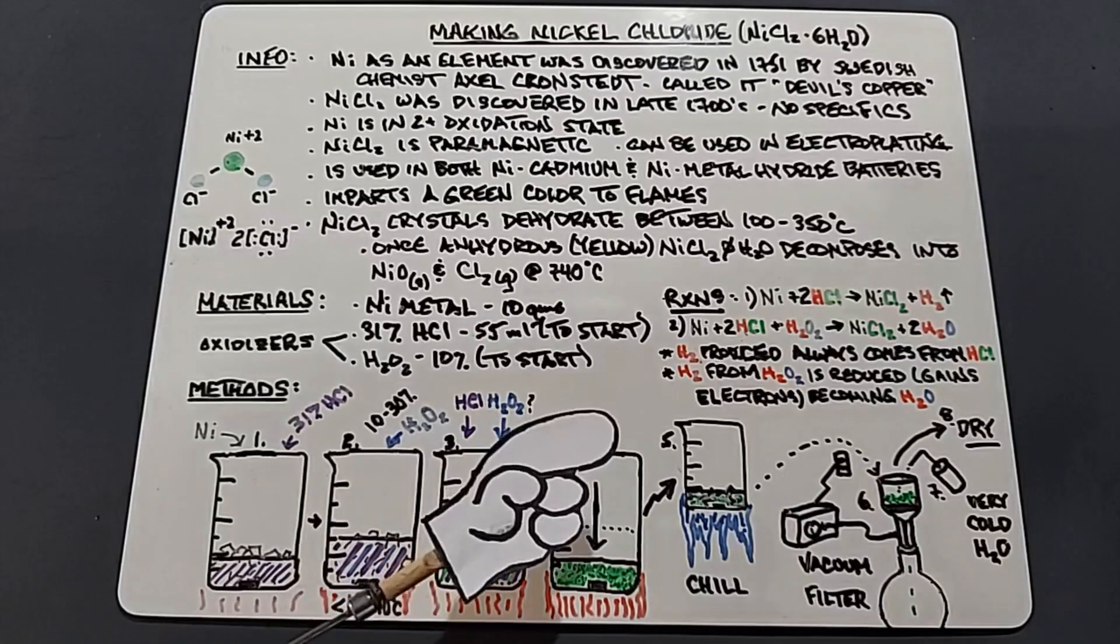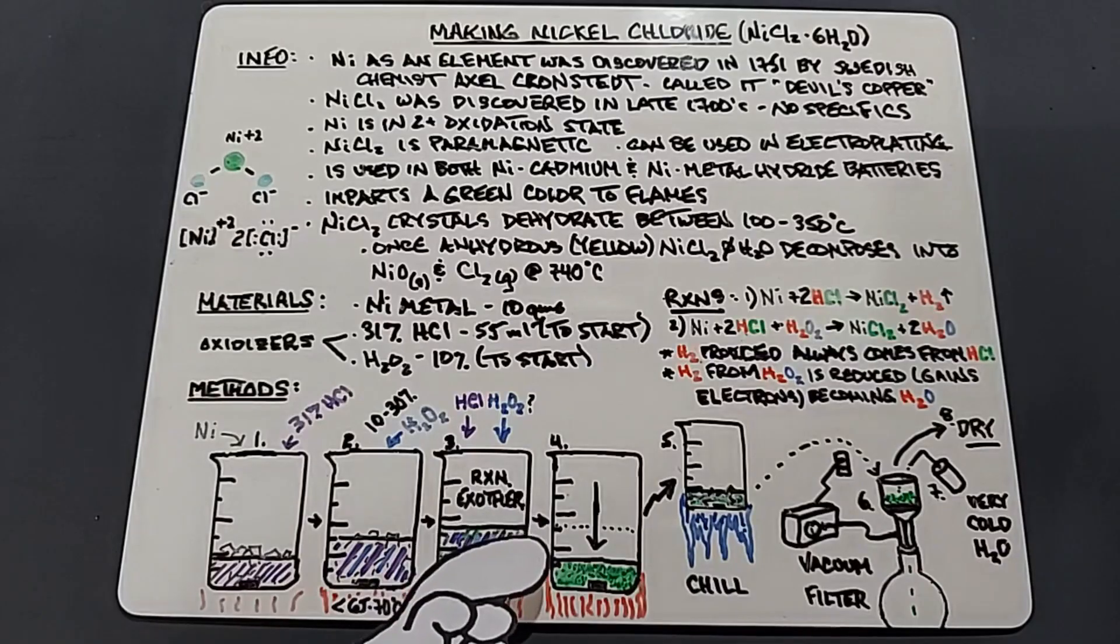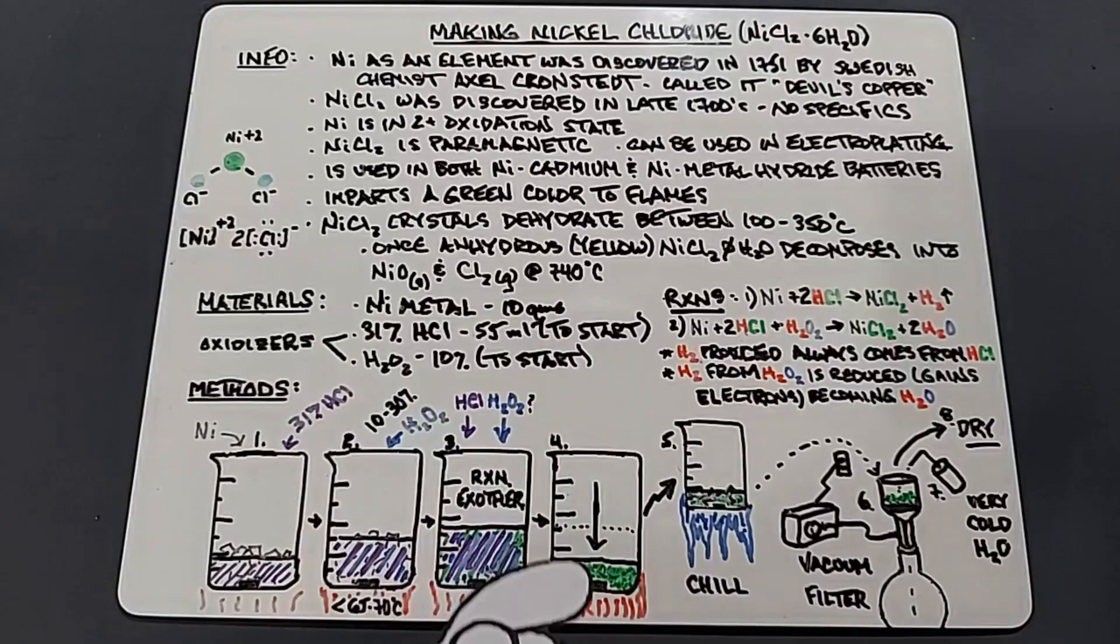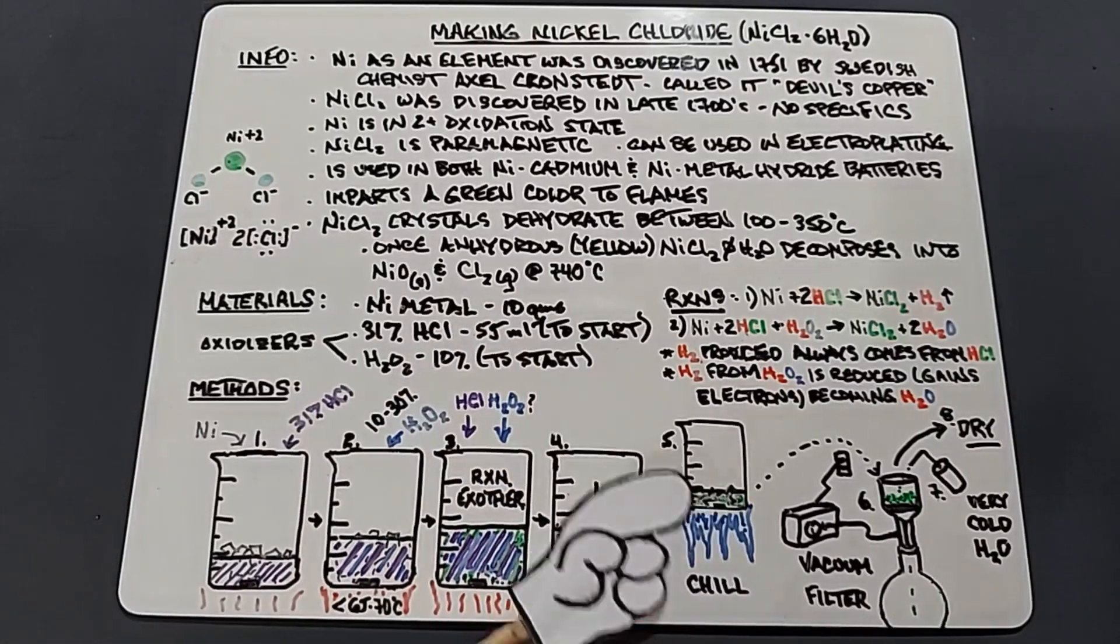Once all the nickel is dissolved, you want to heat it to get rid of as much water as you can. And once it gets down usually to about 10-15% of its original volume or so, I'll start to chill it to see if we can get crystals. If not, put it back on the heat and get rid of more water and chill it until crystals form. Once these crystals form, I plan on vacuum filtering them and using some very cold distilled water just to briefly wash them to get rid of any impurities, and then we dry them and weigh them.